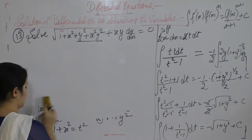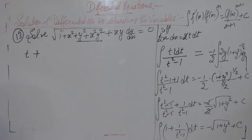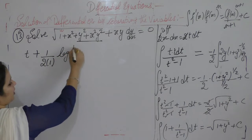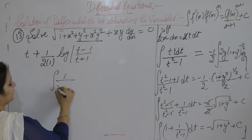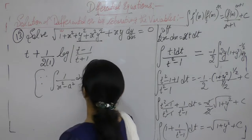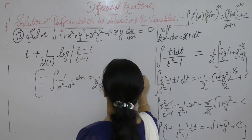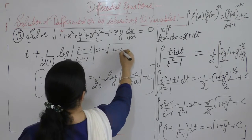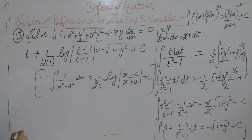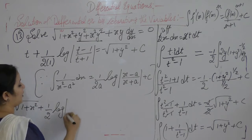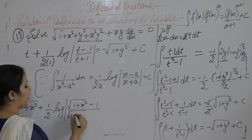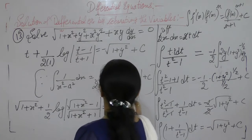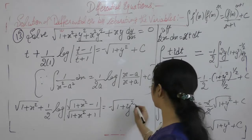Now, the integral of 1 is t with respect to t, and the integral of 1 upon (x² − a²) is equal to 1/(2a) · log[(x − a)/(x + a)] + c. So here we get minus √(1 + y²) plus c. Now, the value of t is the square root of 1 + x², so plus 1/2 · log[(√(1+x²) − 1)/(√(1+x²) + 1)] is equal to minus √(1 + y²) plus c.